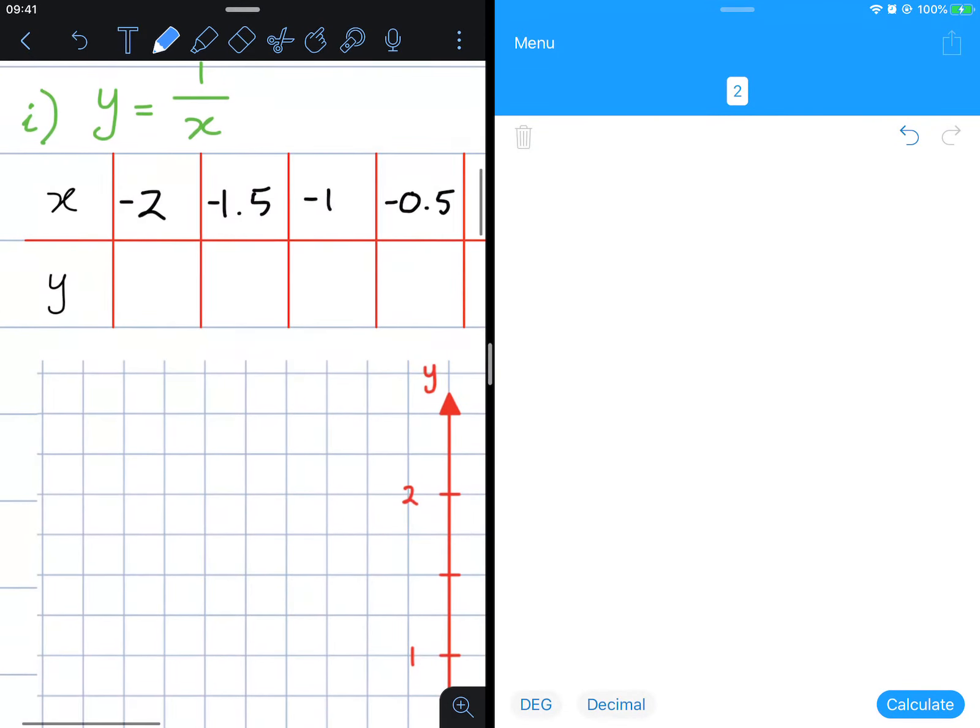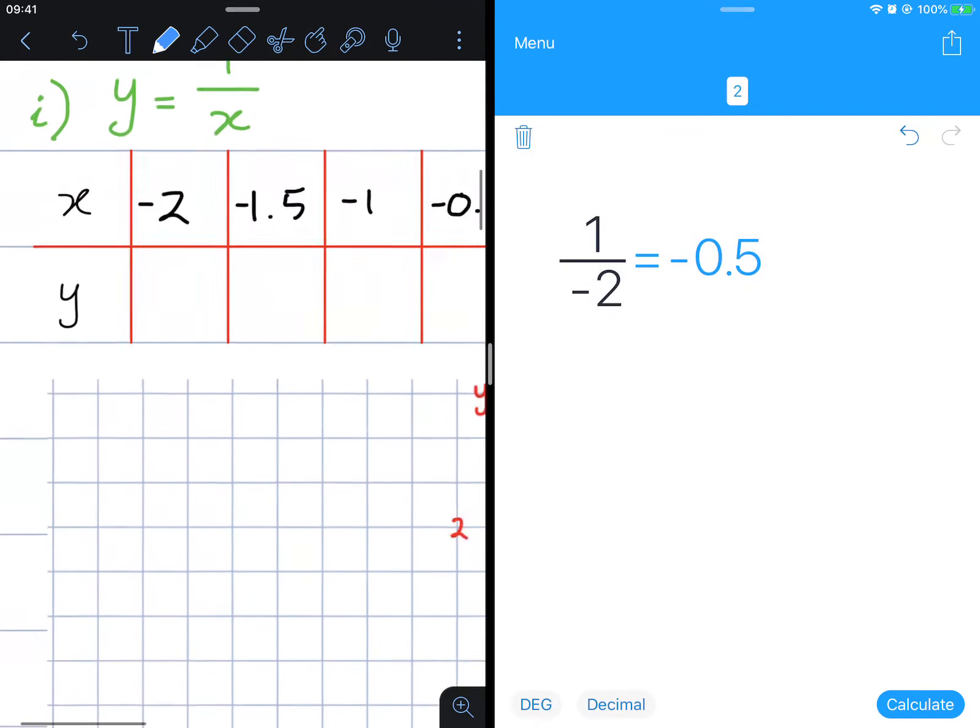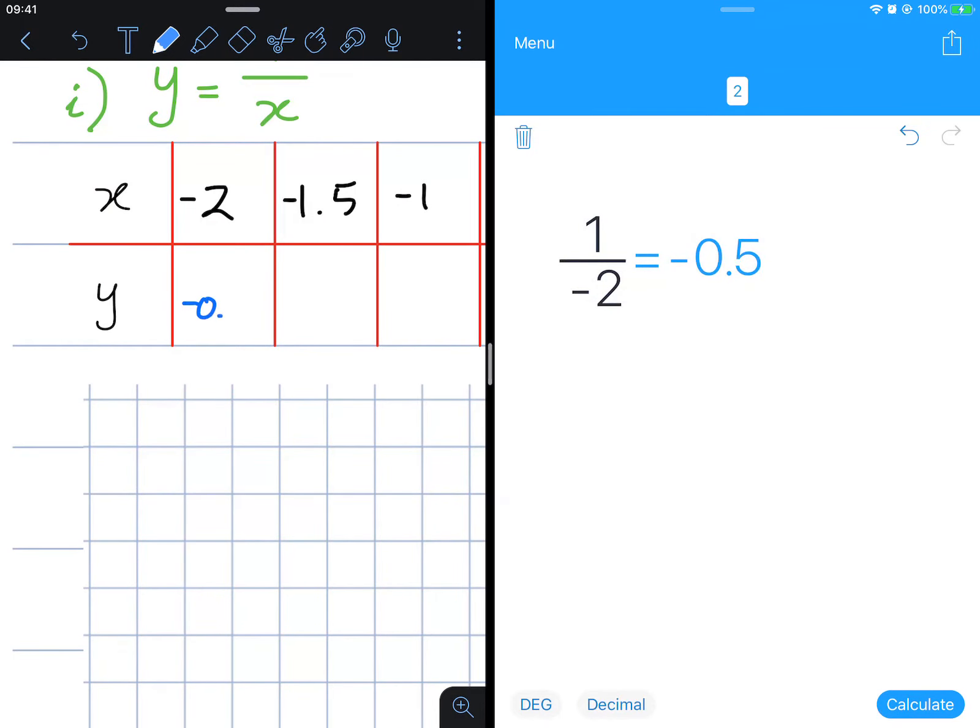You can input the values in. So 1 over negative 2 gives us negative half or negative 0.5.